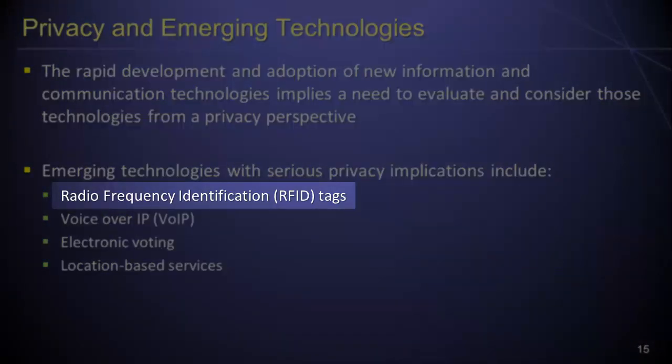RFID tags are small, inexpensive devices, each of which is uniquely identifiable from a distance. Although RFID tags have obvious benefits for inventory management, supply chain operations, and production processes, they also have serious privacy implications. Consider, for example, that all driver's licenses and credit cards may soon contain embedded RFID tags. Since these tags can be scanned remotely and secretly, a widespread sensor network would allow governments or organizations to track and monitor individuals' movements and activities without their knowledge or consent.